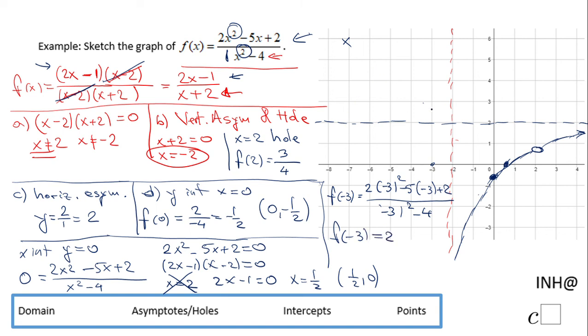Which means it's gonna be somewhere here. Which means the graph should go something like this.